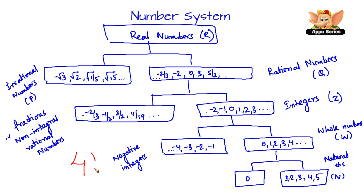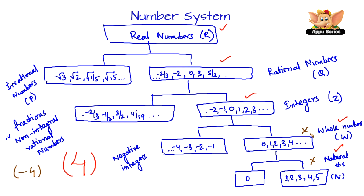Let's take the example of number 4. Number 4 is a natural number, it is also a whole number, it is also an integer, it is a rational number, and it is a real number too. Now let's consider another example, which is negative 4. Negative 4 does not belong to natural numbers, it does not belong to whole numbers, but it does belong to integers. It is a negative integer, it is a rational number, and also it is a real number.